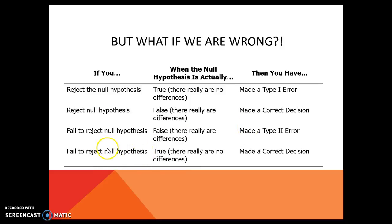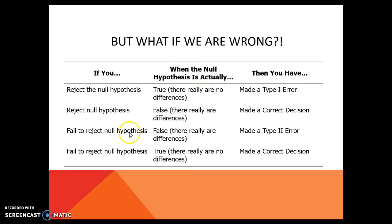And of course, if we say there's no difference and in reality there is no difference, then we made a good decision again. So type 1 and type 2 error has to do with what decision did you make, and in reality, what is true? If we say that there is a difference between male and female when in reality there's not a difference, that's a type 1 error. If we say there is no difference between the two groups, and in reality there is a difference we just couldn't find it, that's a type 2 error.